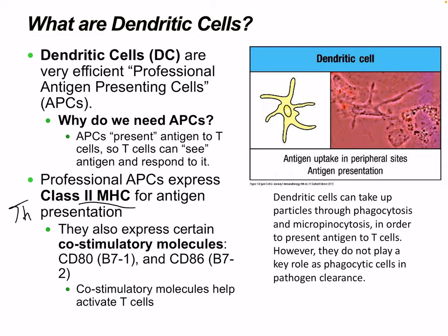Professional APCs also express co-stimulatory molecules including CD80 (also known as B7) and CD86 (B7-2). These co-stimulatory molecules are needed for interaction — you can't have just the class 2 MHC interaction alone, you need both. Dendritic cells can take up particles through phagocytosis or macropinocytosis to present antigen to T cells, but they don't play a key role as phagocytic cells — they're more specialized antigen-presenting cells.